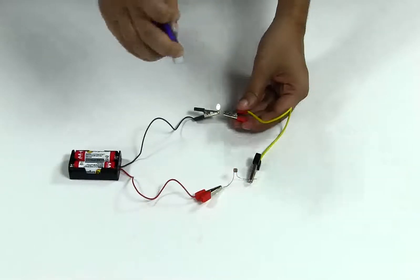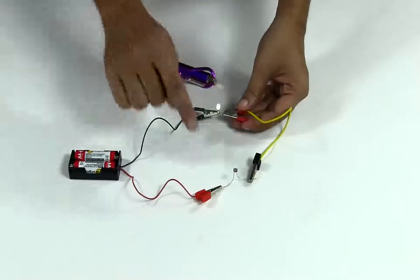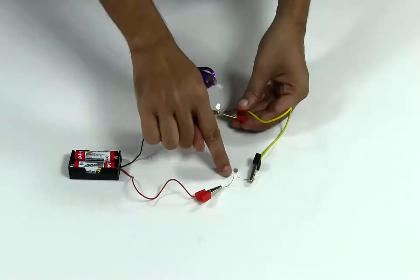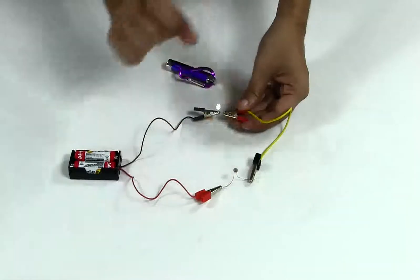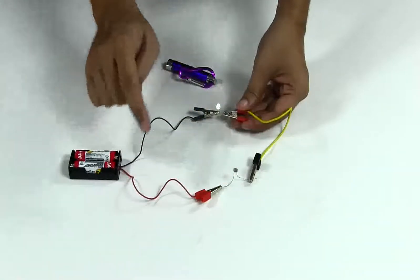This is because the LDR is a light dependent resistor, which means if you shine light upon it, the resistance of this device goes down and more current can pass through it.